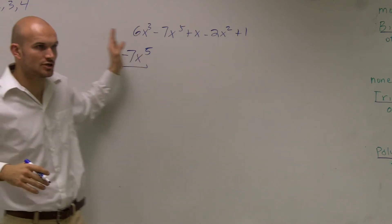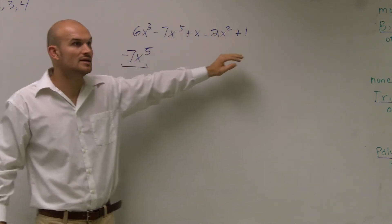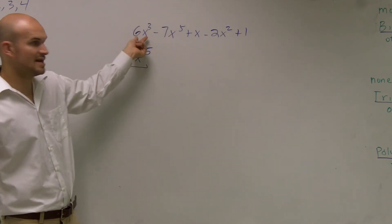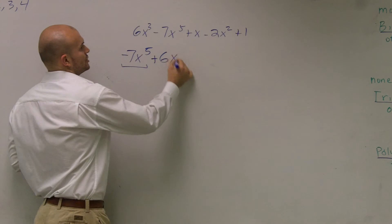Then what I do for standard form is you just go in descending order of the exponents. So the next largest exponent would be 4, which I don't have up here. But then the next one would be that positive 6x cubed.